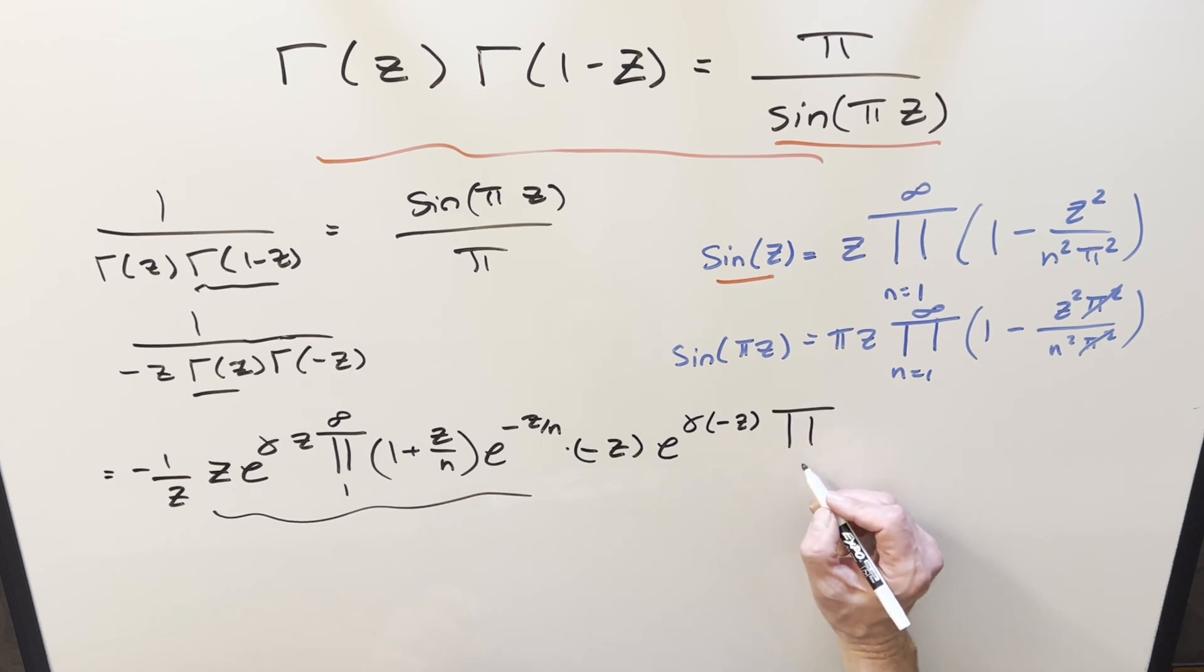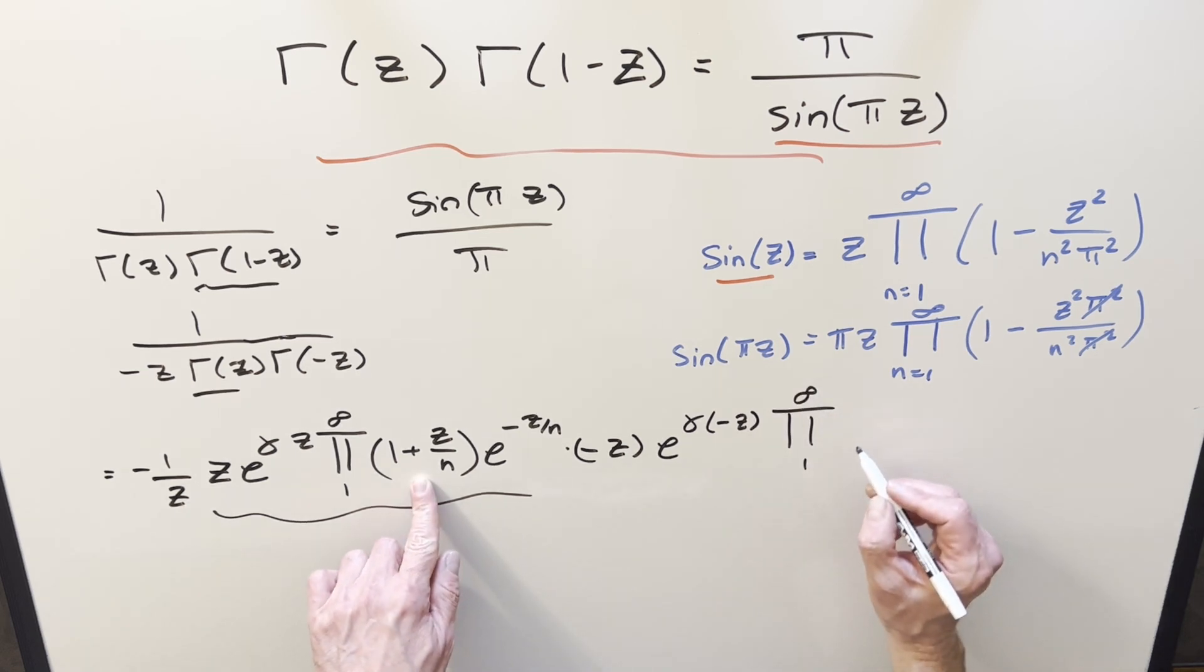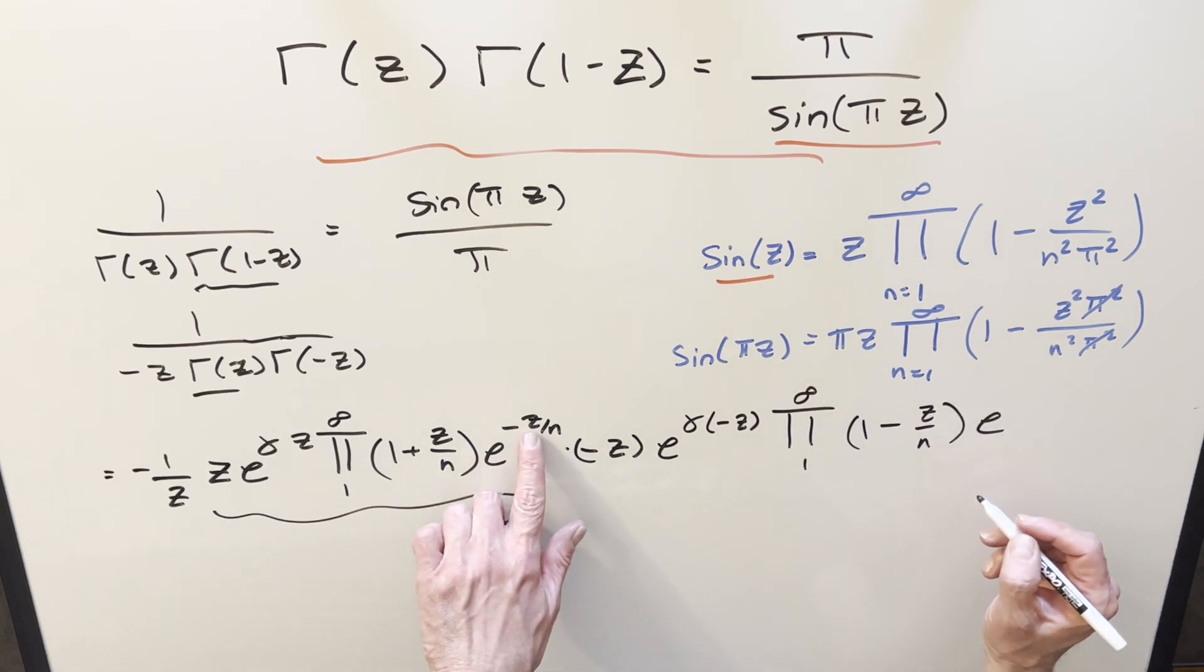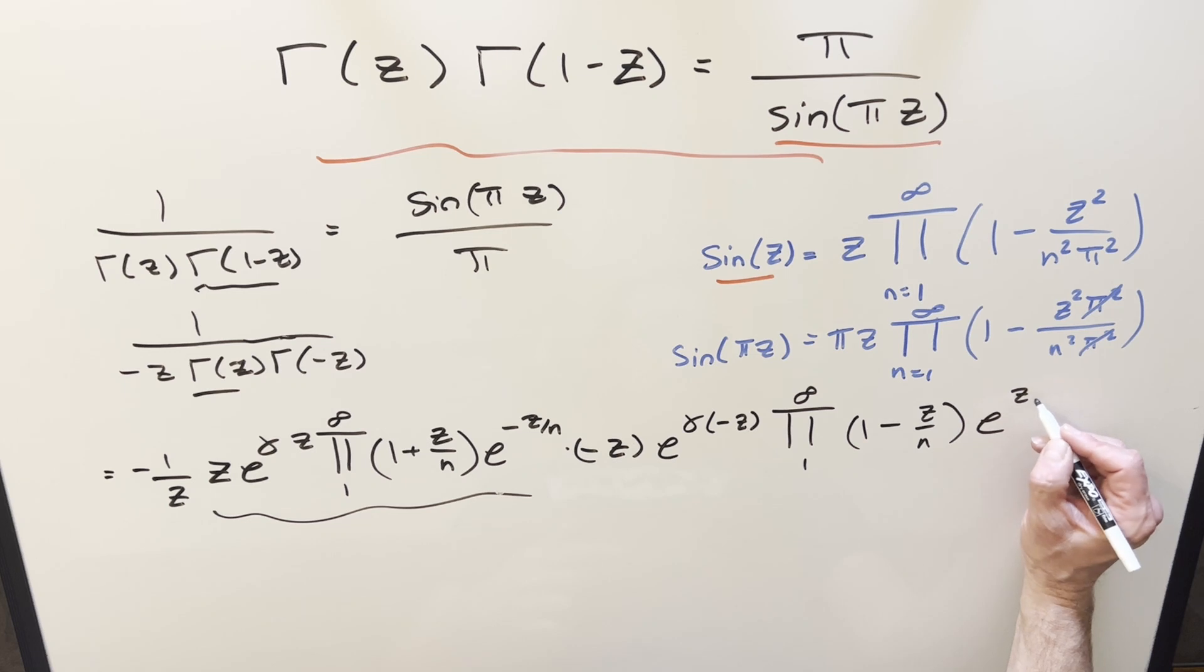Then we have our big product. This is going to become 1 minus now with the minus z. So this would be 1 minus z over n. And then we have e. Again, plugging minus z in here, this is going to become positive z over n.